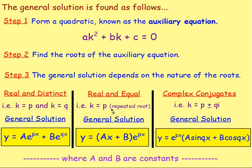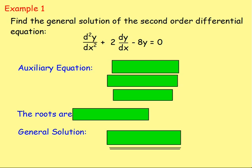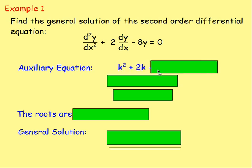Where a and b in each of these are constants. Example 1: find the general solution of the second order differential equation d²y/dx² plus 2 dy/dx minus 8y equals 0. The first thing we want is the auxiliary equation. We take the coefficients of d²y/dx² — which is 1 — dy/dx — positive 2 — and y — negative 8. So the auxiliary equation will be k² plus 2k minus 8 equals 0.